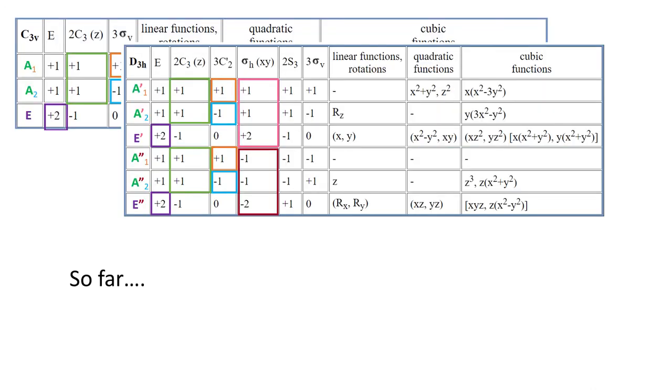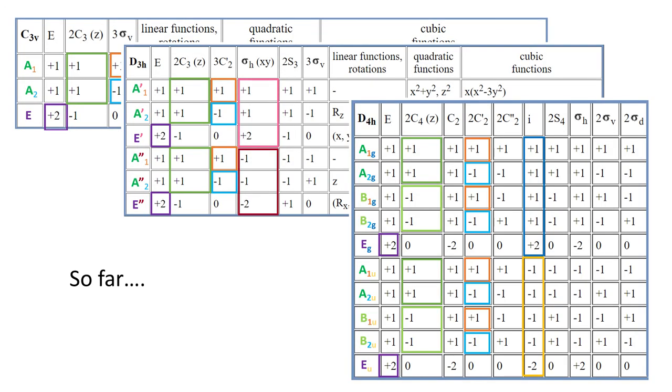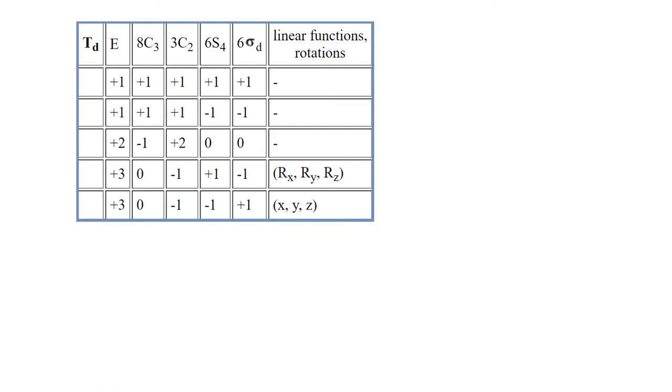So, so far we've done few examples, and assigning symbols to representations seems to be easy. However, it's not always that easy. Let's look at TD group. We can see that there is one E representation, two T representations, and two singly degenerate representations. So we look under the main axis, both representations are symmetric under the main axis of rotation, so there are A's.